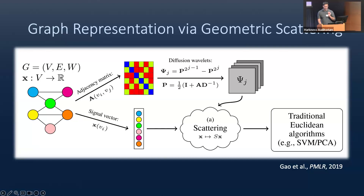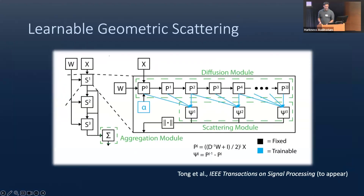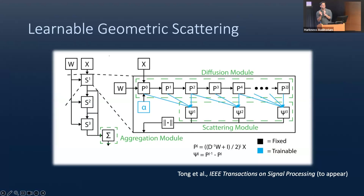There's one problem: how do we know which exponents to raise P to? That depends on the size of the input graphs — are the molecules big or small? In machine learning, we just learn the answer. What we do is take P raised to various dyadic scales and let the architecture learn a linear combination of those to figure out the correct scales needed to represent the input molecule.